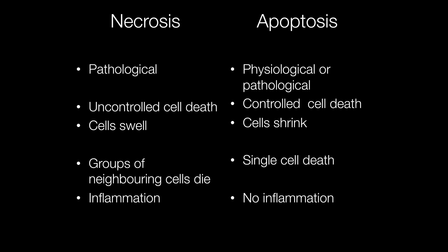Finally, there is another type of cell death — apoptosis — and it is worth comparing the differences between necrosis and apoptosis. Necrosis is a pathological condition, whereas apoptosis is usually physiological or can be pathological. Necrosis is uncontrolled cell death; apoptosis is controlled cell death. In necrosis the cells swell, and in apoptosis they shrink into apoptotic bodies. In necrosis it is groups of neighbouring cells that die, whereas in apoptosis it is single cells that die. In necrosis there is an inflammatory response to the necrotic tissue, and in apoptosis there is no inflammatory response.